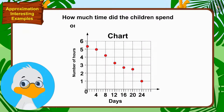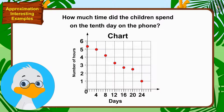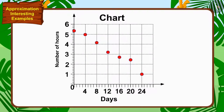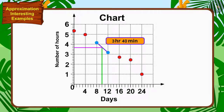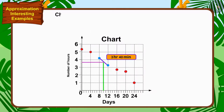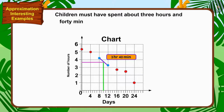Approximately, how much time did the children spend on the 10th day on the phone? Can you find an answer to this question, children? In this way, we can find a solution by connecting the dots of the 8th and 12th days in a straight line. The vertical line on the 10th day is meeting this line at about 3 hours and 40 minutes. So, the children must have spent about 3 hours and 40 minutes on the 10th day on the phone.